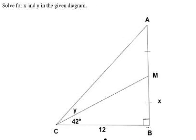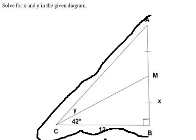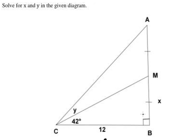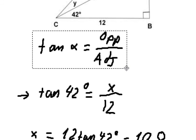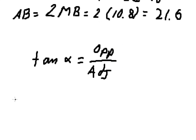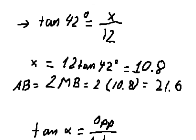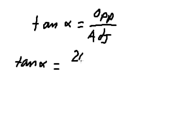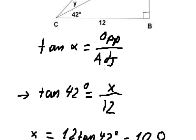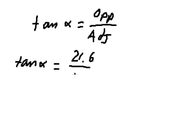After finding AB, if we look carefully at triangle ABC, we have a right angle at B. We have AB and CB, so we can find the angle here using the same formula. Tan alpha equals opposite over adjacent, which is AB over CB — that's 21.6 over 12 — giving us approximately 1.8.